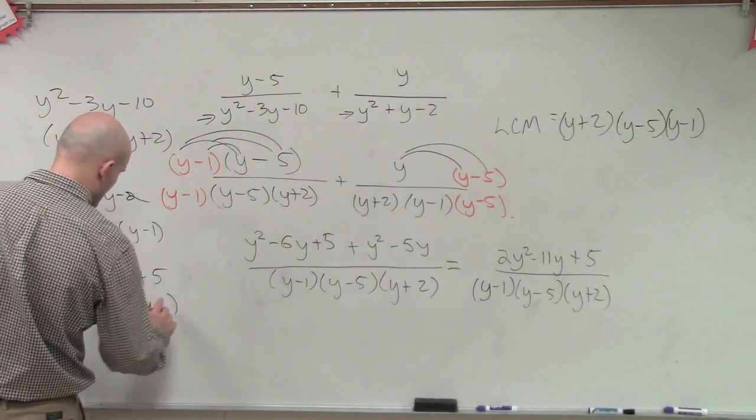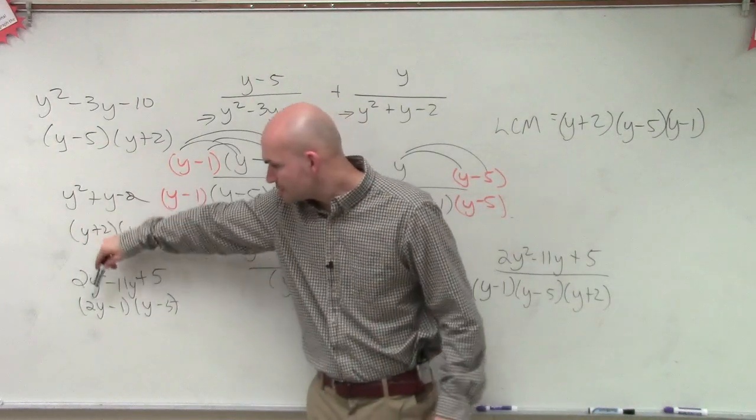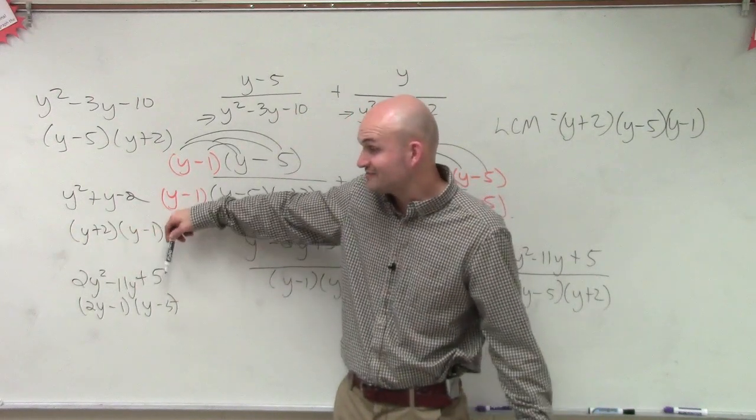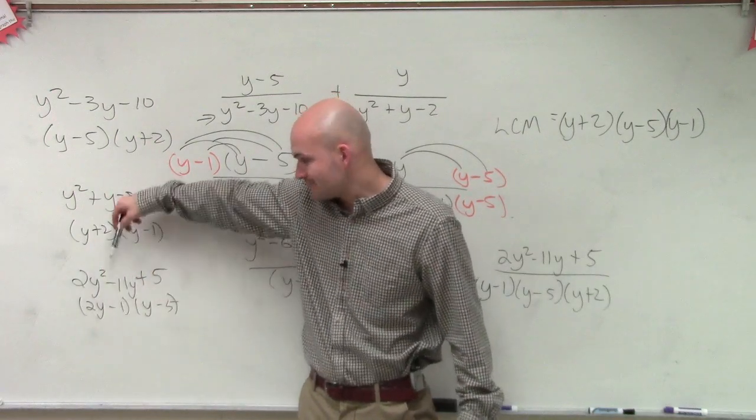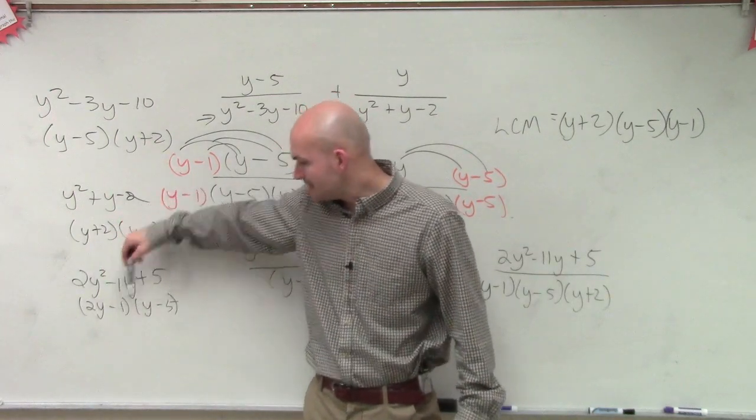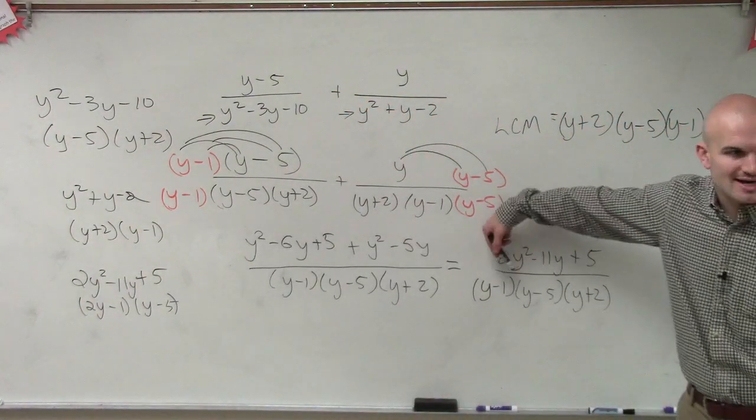2y times y is 2y squared. 2y times negative 5 is negative 10y. Negative 1 times y is negative 1y, which add up to give you negative 11y. And negative 1 times negative 5 is positive 5.